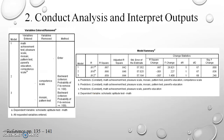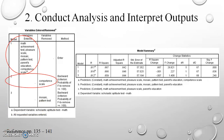The variables entered and removed table is especially important because it tells us which predictor variables were removed from the model. Backward regression begins with all predictor variables, then eliminates those with the largest p-value one by one until remaining variables have a p-value equal to or less than 0.01. Model one included all five predictors; in model two, competence scale was removed; in model three, the mosaic pattern test was removed, leaving math achievement, pleasure scale, and parents' education.